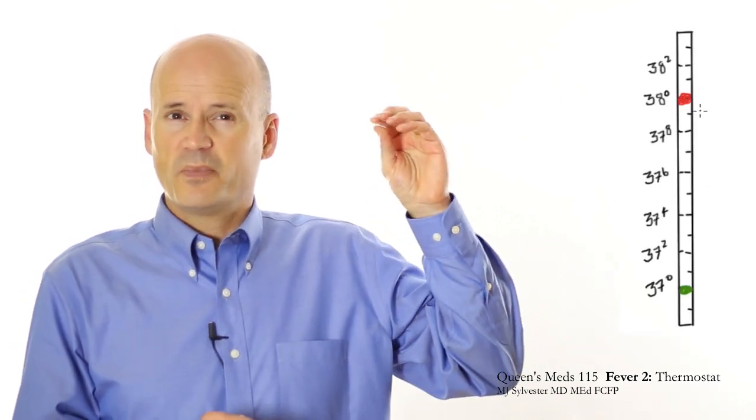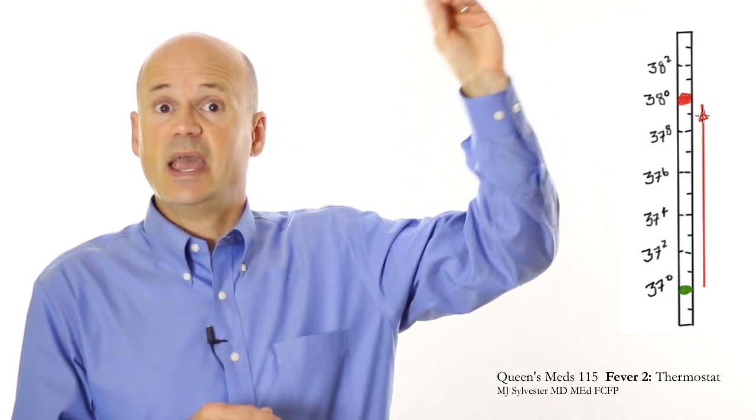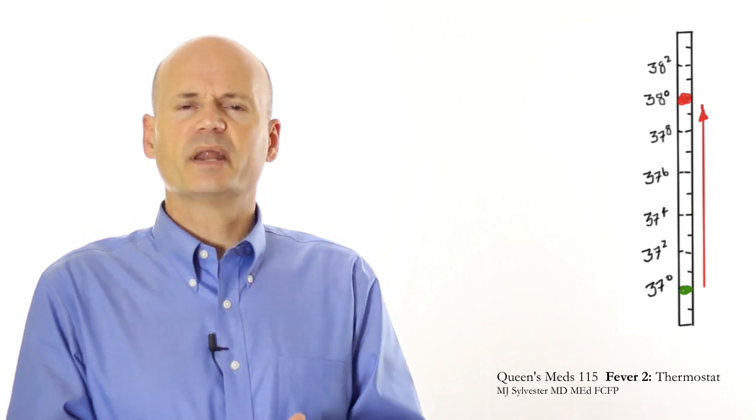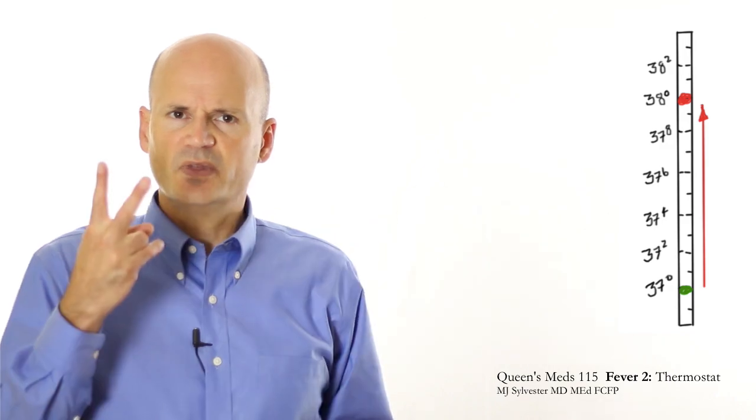So how does your hypothalamus turn up the heat and turn down the heat? Well, let's say that you have an infection and pyrogens have been released by your immune system and have turned your set point in your hypothalamus from 37 degrees, where it normally hangs out for you, to 38 degrees, which is quite a bit warmer. Your hypothalamus has control over the autonomic nervous system, which will do two principal things in order to heat up your core body temperature to meet its new set point to get from 37 to 38.